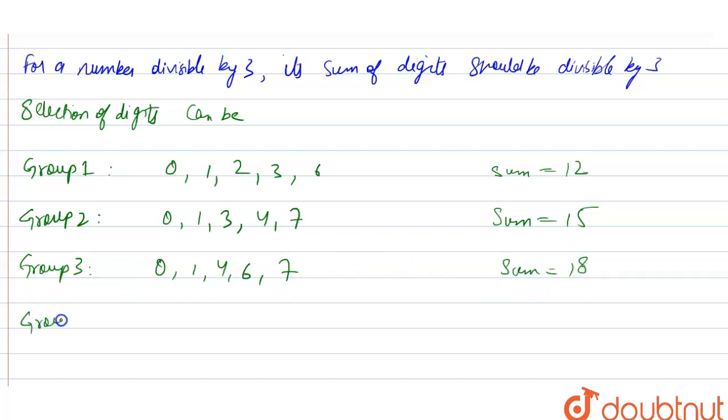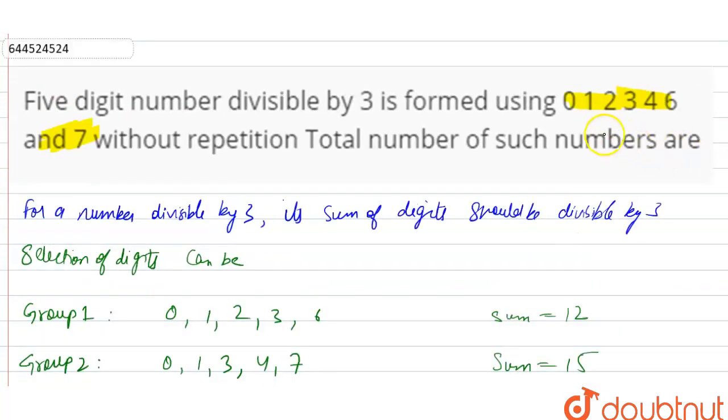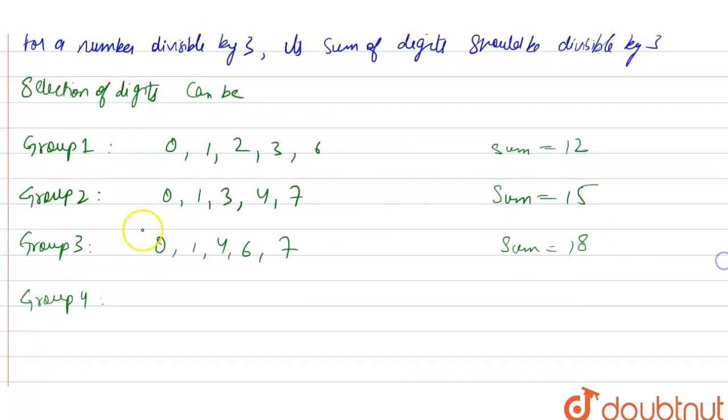Now group 4. Similarly, group 4 will be equal to 0, 2, 3, 6, 4. So 2 plus 3 is 5, plus 4 is 9, plus 6 is 15. So it will be 0, 2, 3, 6, 4. Sum will be 15.